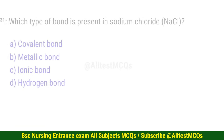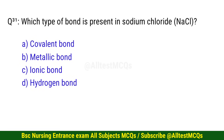Question number 31. Which type of bond is present in sodium chloride NaCl? The right option is C: Ionic bond.